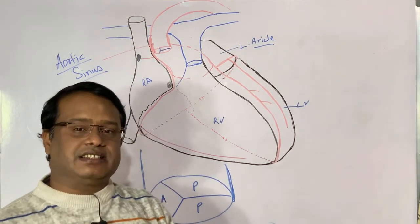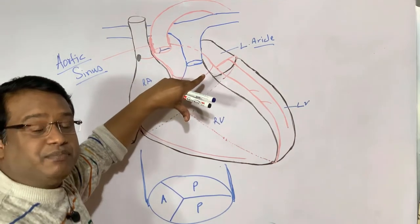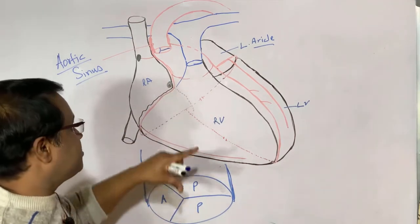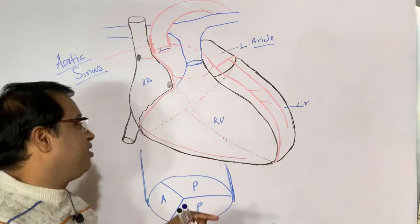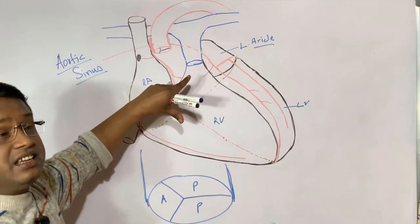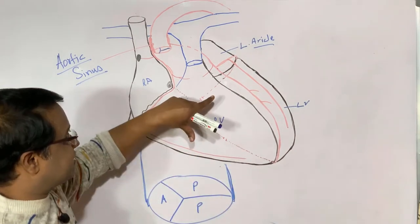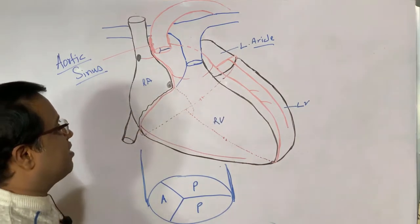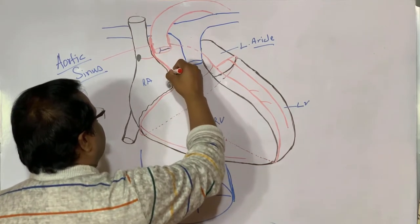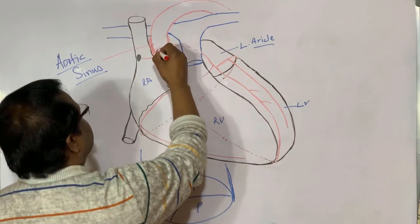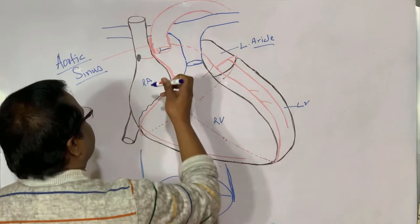Here is an important peculiarity: every organ in our body gets its blood supply during systole. However, the cardiac muscle gets its blood supply during diastole — that is the peculiarity of the heart. Every organ from brain to leg gets oxygen supply during systole, but the heart gets its coronary blood supply during diastole. The right coronary artery originates from the anterior aortic sinus.